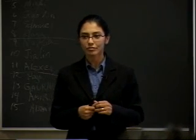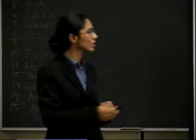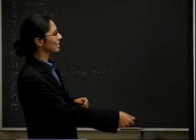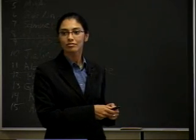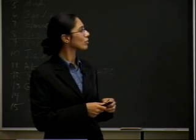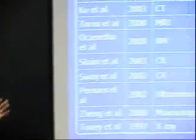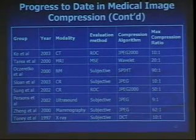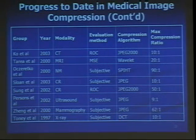Follow-up question on how the maximum compression ratio was determined — was it cut off at the just noticeable difference? The presenter confirms these are the evaluation methods used, which are subjective. One audience member notes 90 to 1 is a very high compression ratio. The presenter and an audience member together suggest that nuclear medicine images are extremely low resolution gamma camera images, which may explain why such high compression ratios are achievable without noticeable diagnostic loss.